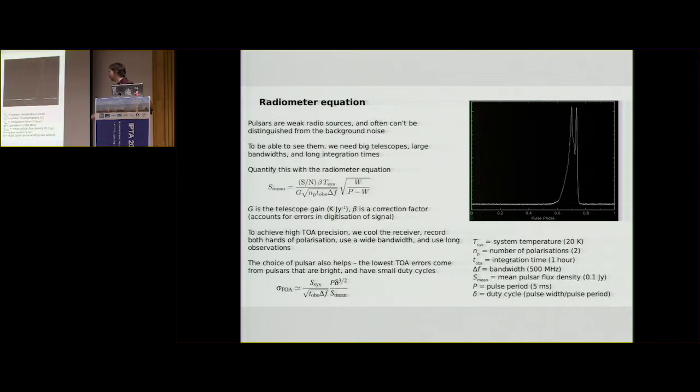Where we just kind of recast the radiometer equation down here. This time I've used this delta symbol to just represent this duty cycle right here. So if we look at some typical values that we could plug into this equation, and you can probably just do this yourself later to get an idea of mean flux density or the typical TOA error.